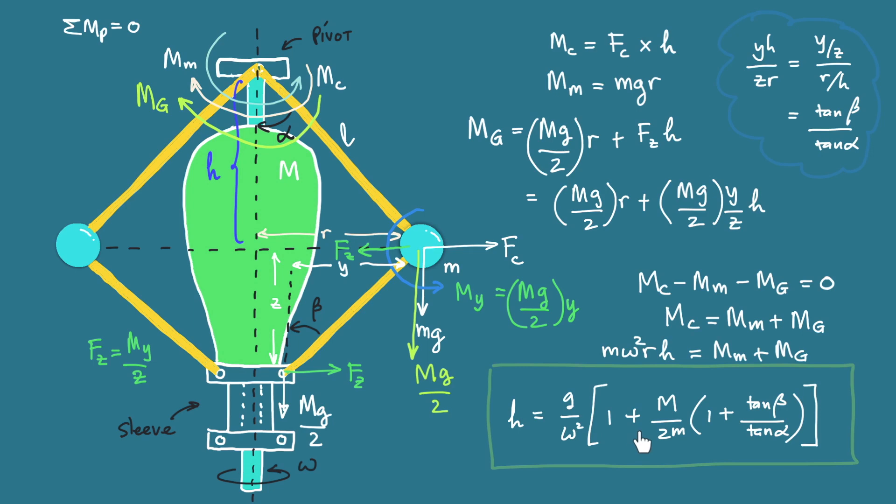Now for the porter governor, because we have this central load, we have this additional term where this term will always be greater than one. If you look here for the second term, this term cannot be zero, which makes the whole term in the bracket more than one. If we have high speed, the value of g over omega squared will be multiplied by the value of this bracket, which prevents the value of H to be very small as in the case of the Watt governor. So at high frequency, the sleeve can have small displacement around the equilibrium position.